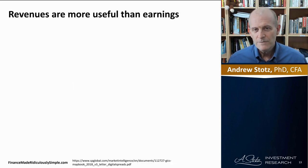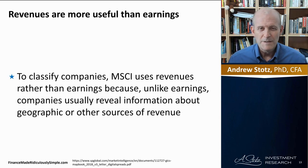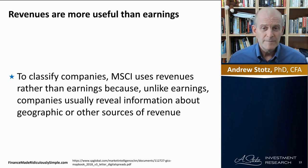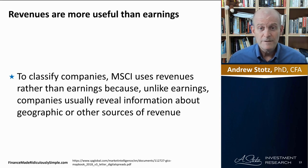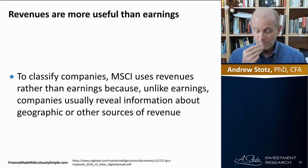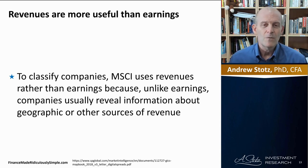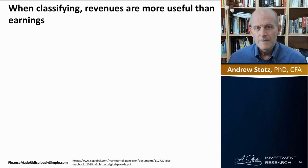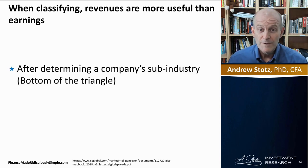Revenues are more useful than earnings when looking at and classifying companies. MSCI uses revenues rather than earnings. Unlike earnings, companies usually reveal information about geography or other sources of revenues in their financial statements, but they don't always reveal earnings or profits. So when classifying, revenues are more useful than earnings.